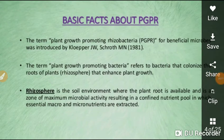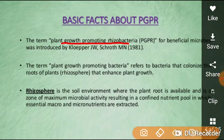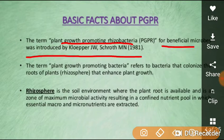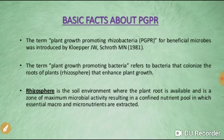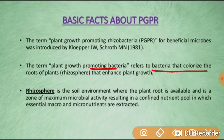The term plant growth promoting rhizobacteria for beneficial microbes was introduced by Kloepper and Schroth in 1981. The term referred to bacteria that colonize the roots of plants in the rhizosphere and enhance plant growth.